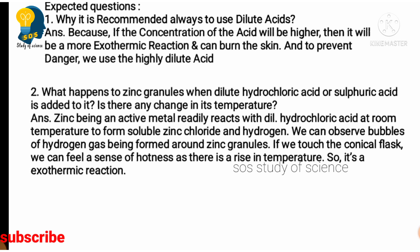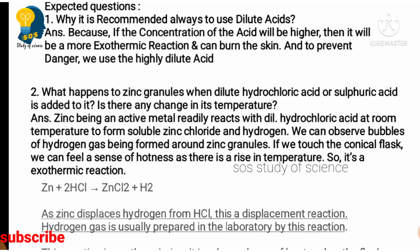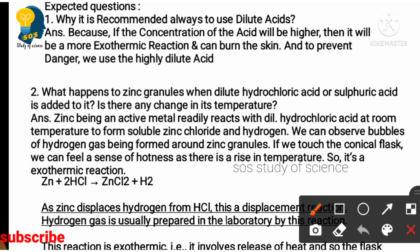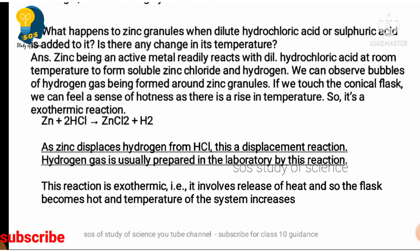The next question is: what happens to zinc granules when dilute hydrochloric acid or sulfuric acid is added to it? When we add dilute hydrochloric acid or sulfuric acid to zinc, we can see the release of bubbles and hydrogen gas is liberated. The temperature also increases. Zinc combines with hydrochloric acid to form zinc chloride (a salt) along with the liberation of hydrogen gas. Since zinc displaces hydrogen from HCl, this is also a displacement reaction. Hydrogen gas is usually prepared in the laboratory by this type of reaction.